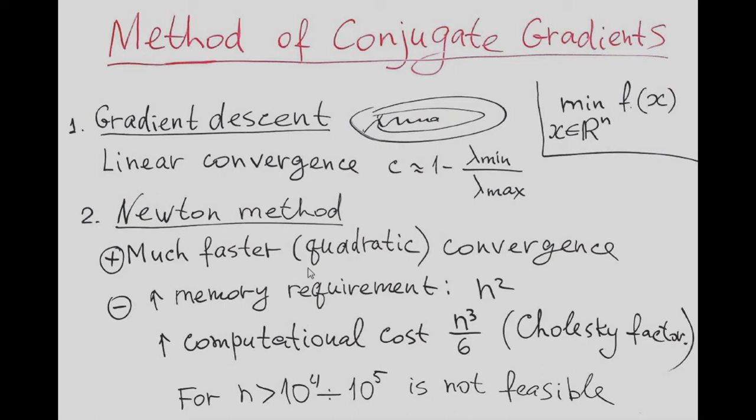On the other side, it requires evaluation of Hessian matrix, which takes n square elements of storage, n square numbers for storage. And in order to solve linear Newton system of equation, we need n cube divided by 6 operations for Cholesky factorization. In this situation, we cannot solve problem with more than 10,000 to 100,000 variables.